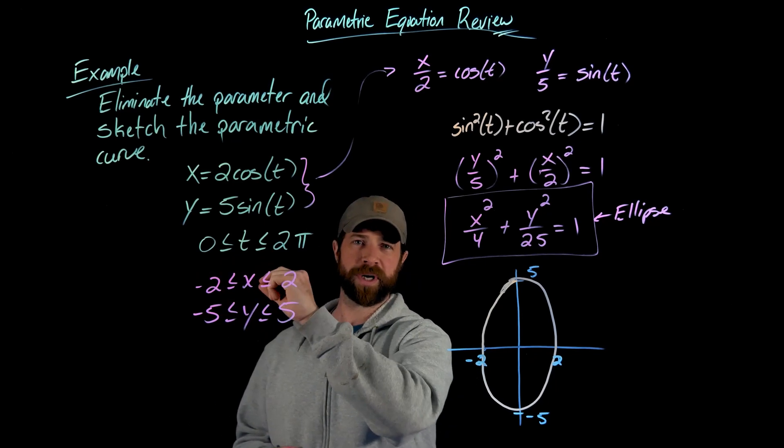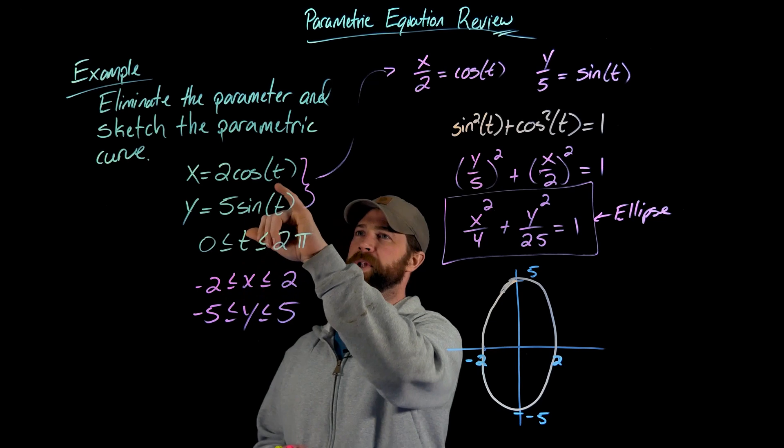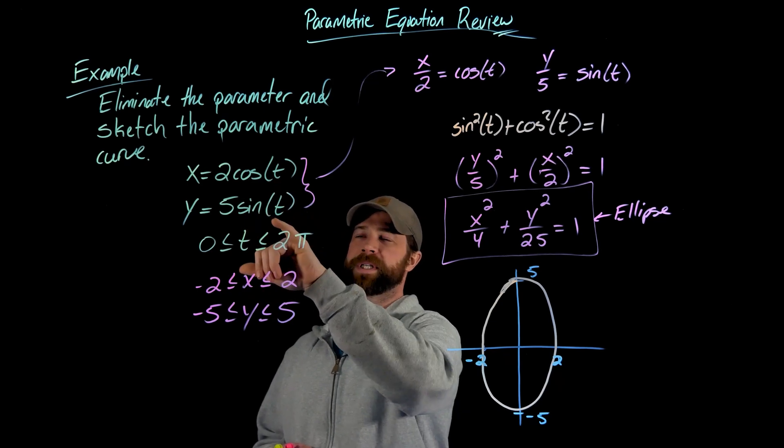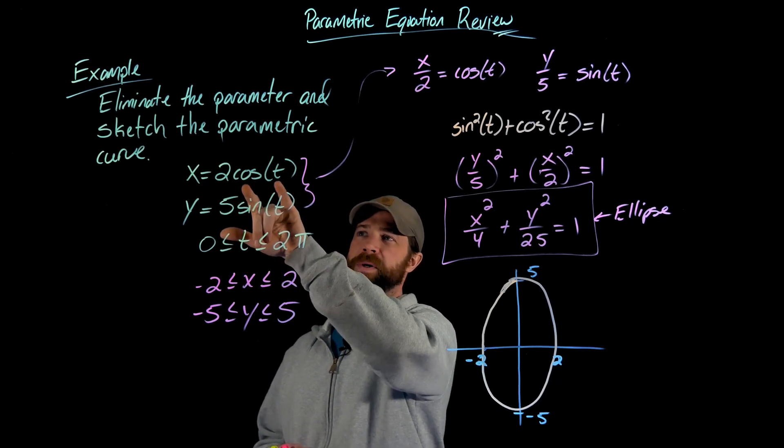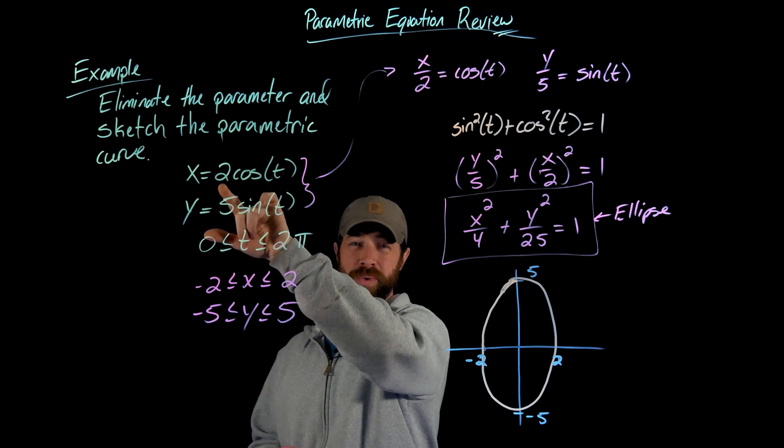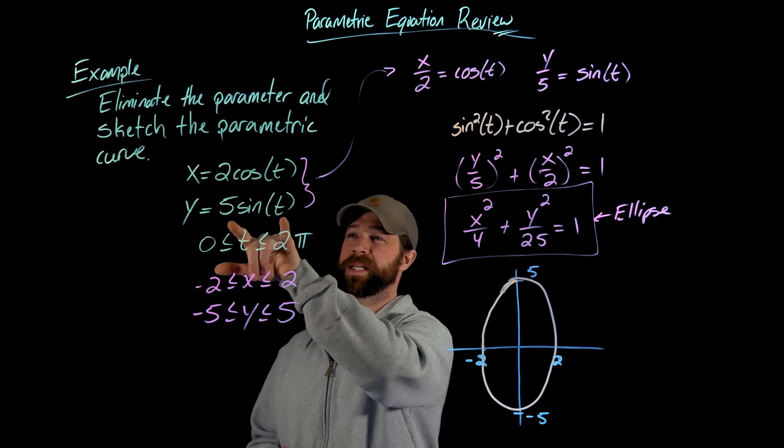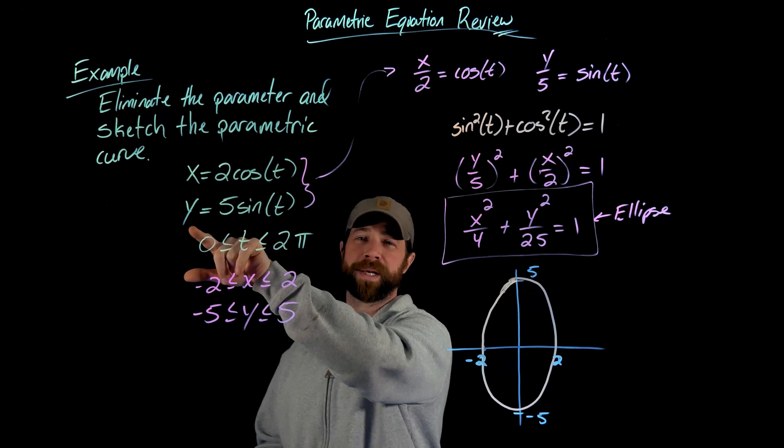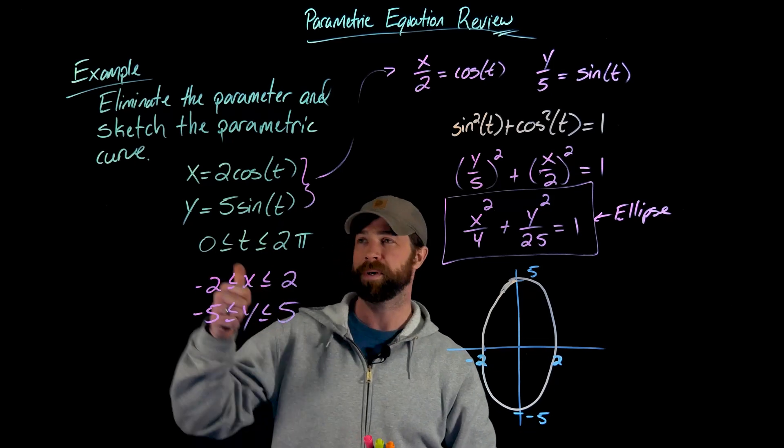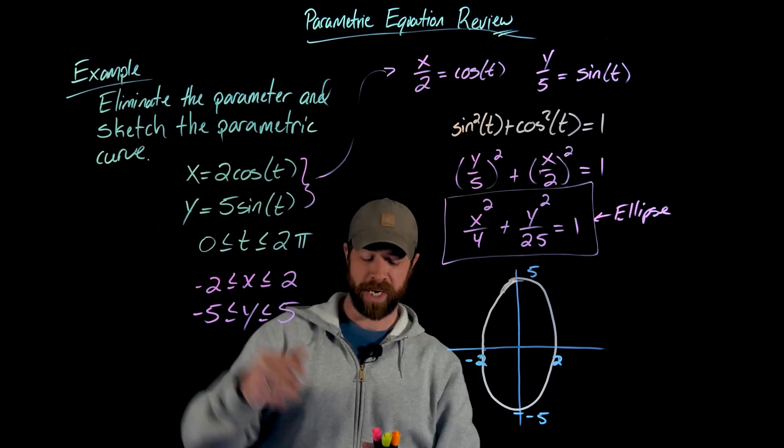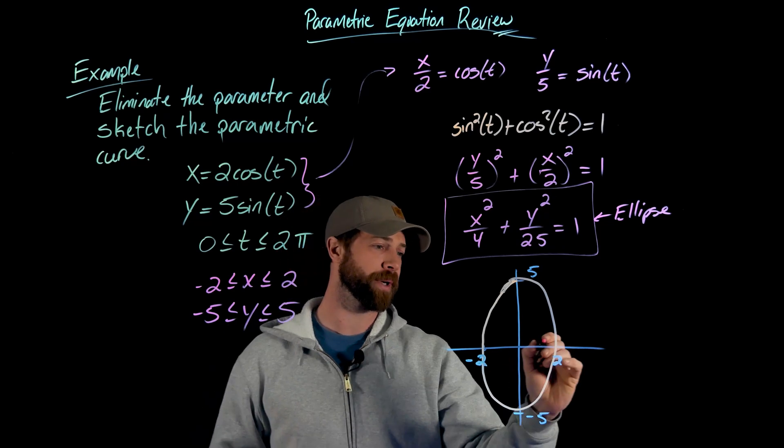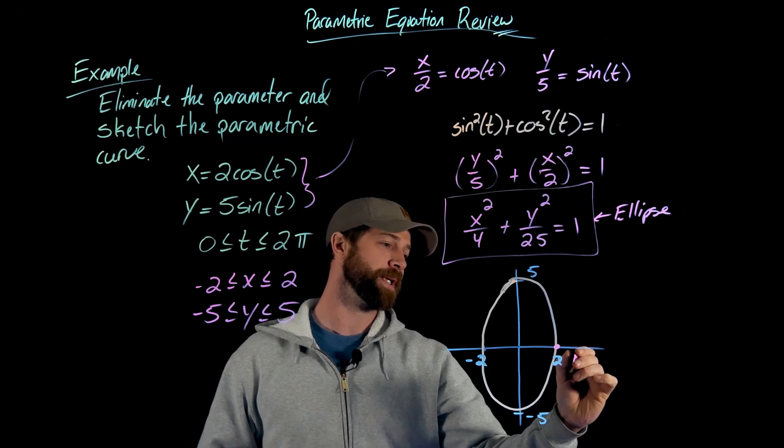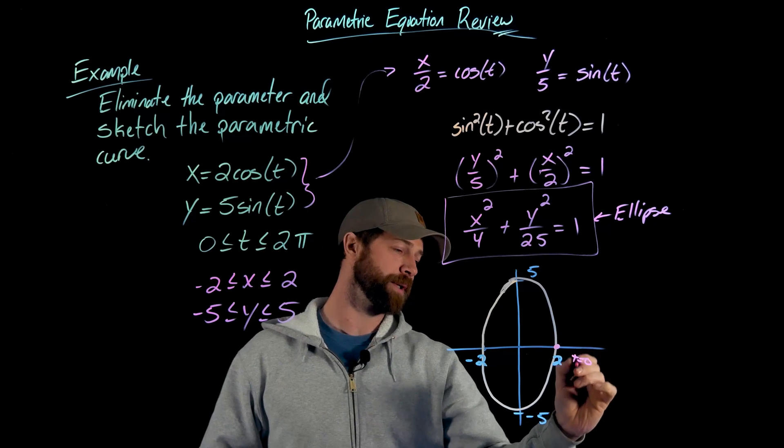When t is zero, we're starting at t equals zero and I plug in zero for t in both cases. The cosine of zero is one so x is going to be two, and sine of zero is zero so y is zero. So when t is zero I get x equals two and y equals zero, which gives me this point right here when t equals zero.